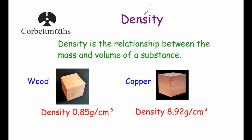Today we're going to look at density. So what is density? Well, density is a relationship between the mass and the volume of a substance. Here we've got two blocks with the same volume — a block of wood and a block of copper. The block of copper would be much heavier; it would have a higher mass than the block of wood, and the reason is that copper has a higher density than wood.